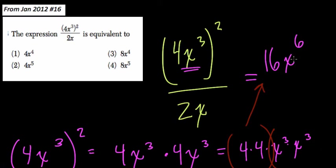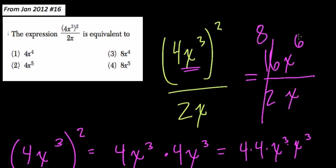Anyway, that's my thinking there in the numerator. Now, that's over 2x. Over 2x, this is great because 16 over 2 is just 8. We divide, and x⁶ over x is x⁵.